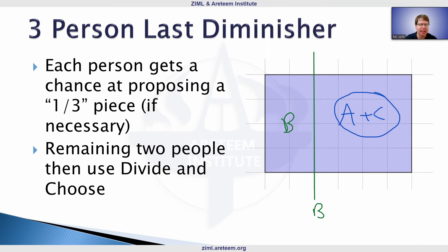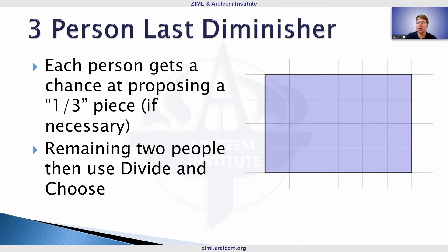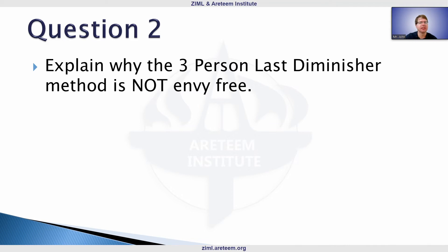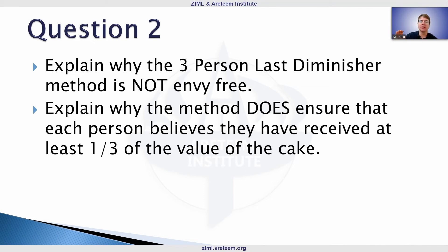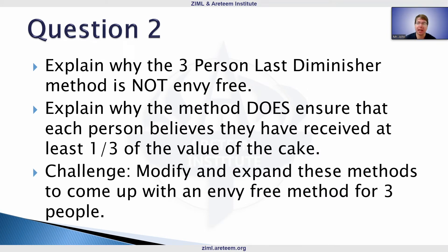This is a common approach in game theory and mathematics: reducing the problem to a smaller size. With three people, the key question is how to handle that third person — once we give them a piece, we're down to two people, which we've already solved. Now, the question we want to show is that this method is not envy-free, even though everyone still thinks they've received one-third of the value of the cake. There is a challenge to come up with an envy-free method for three people — let us know in the comments if you want hints.